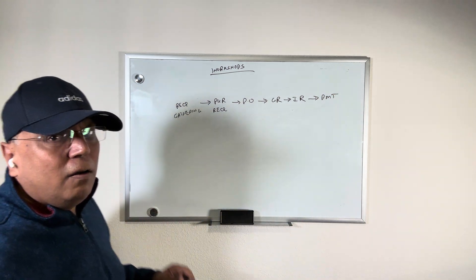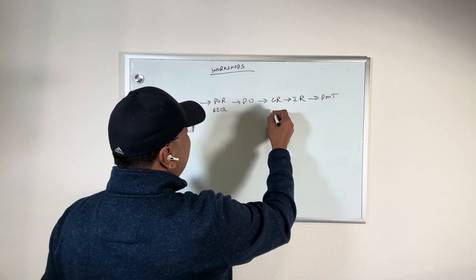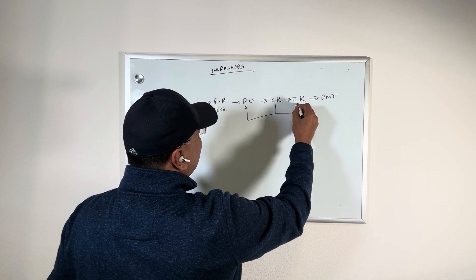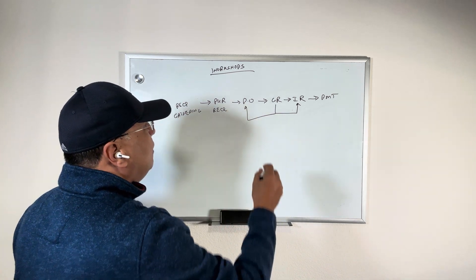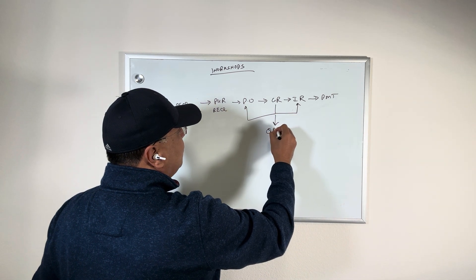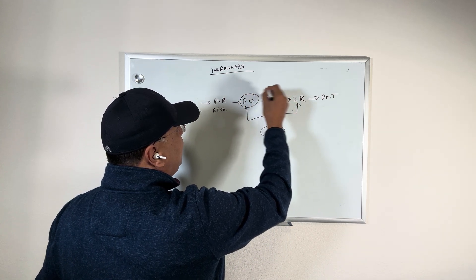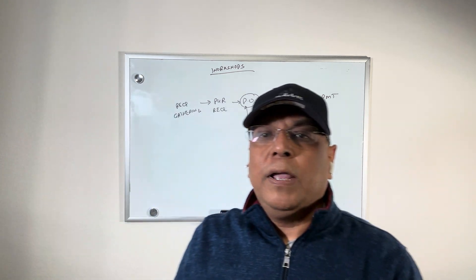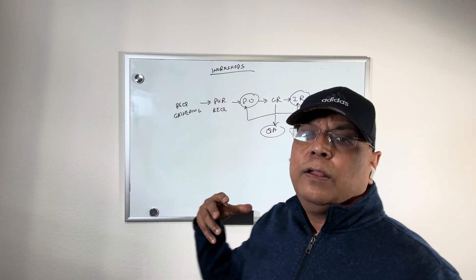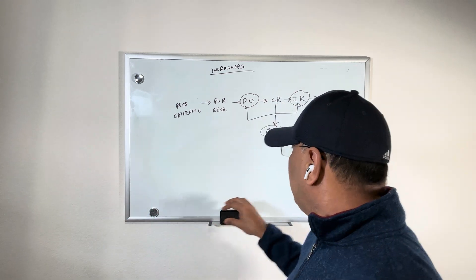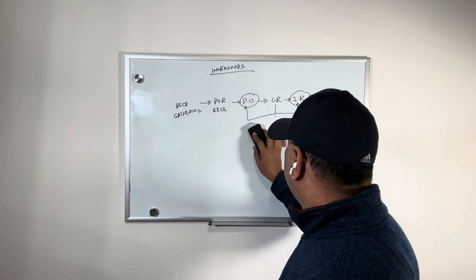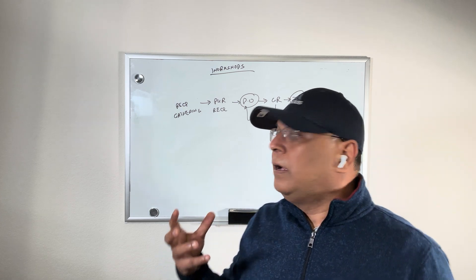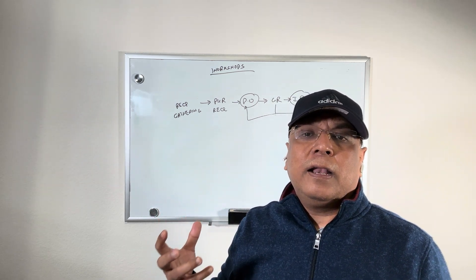SAP by default does matching of goods receipt to PO, matching of goods receipt to invoice receipt, and also matches to quality assurance. A lot of companies may not be doing QA by default, so you might have to remove the QA piece. Removing QA tells me this is not 100% meeting the client's requirement — that's one fit gap.